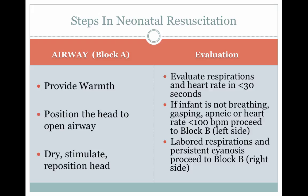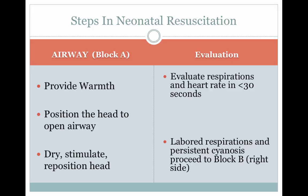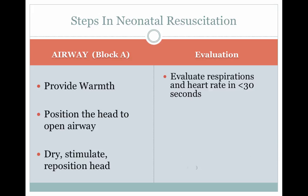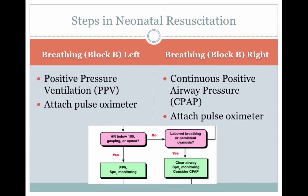Block B — Breathing. If the infant is apneic or has a heart rate less than 100, proceed to positive pressure ventilation (PPV). If the heart rate is above 100 but the baby still shows signs of compromise with labored respirations and persistent cyanosis, administer continuous positive airway pressure (CPAP). After initiating either PPV or CPAP, place a pulse oximeter on the infant to determine the need for supplemental oxygen.